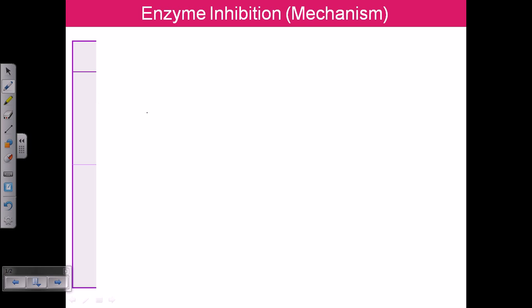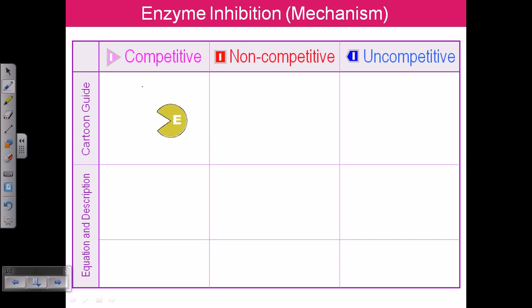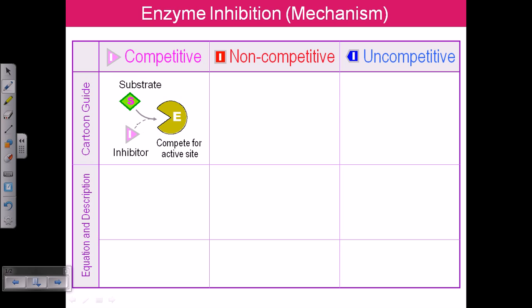Competitive inhibition means substrate and inhibitor compete to bind with the active site of the enzyme. So here, the enzyme and substrate can produce an enzyme-substrate complex, but instead of binding with the substrate, the enzyme can bind with the inhibitor. When the inhibitor replaces the substrate, it forms an enzyme-inhibitor complex and is no longer functional, so product formation will be blocked.